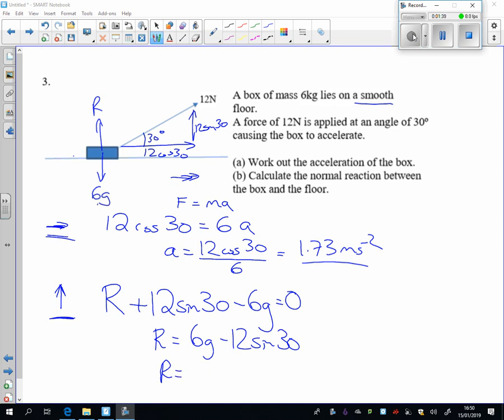6 times 9.8, take away 6 basically. Gives you 52.8 newtons. Thank you.